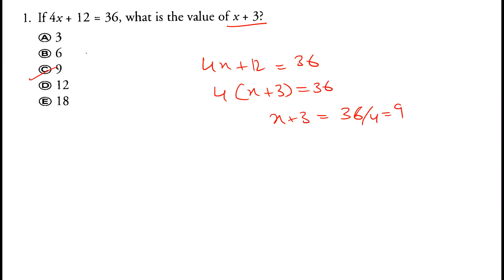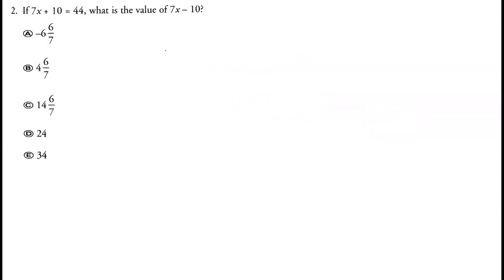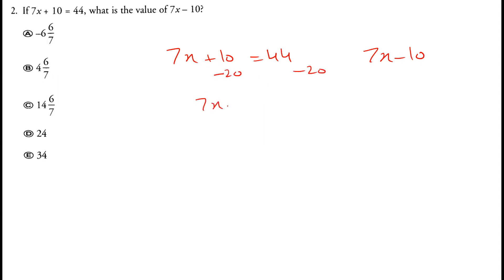Question 2: 7x plus 10 equals 44. What will 7x minus 10 equal? We have plus 10, so if we subtract both sides by 20, this becomes 7x minus 10, and 44 minus 20 equals 24. The correct answer is option D.